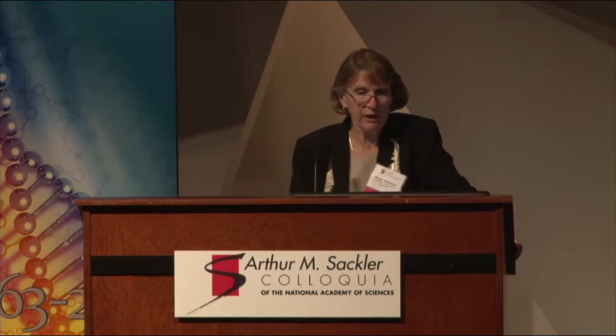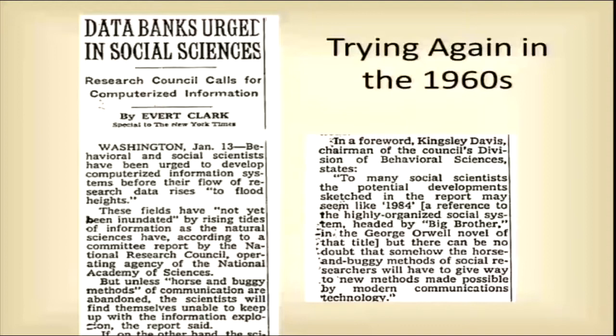In the 1960s, we come back again to this. Kingsley Davis, who is an Academy member, proposes along with the National Social Science Research Council and the Office of Management and Budget to create — now that we have really fancy computers — to centralize this. This hits Congress and goes nowhere, and it opens up the privacy debates and the suspicion of science that we heard about in the last panel.